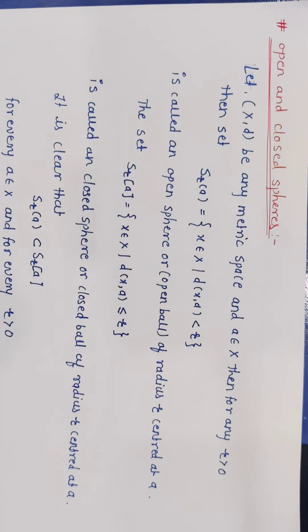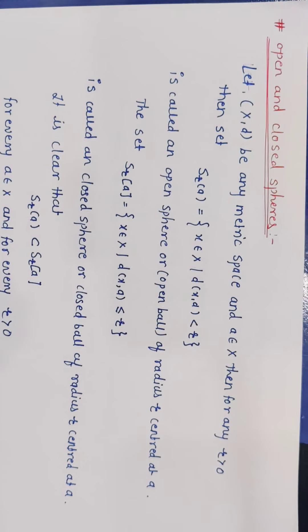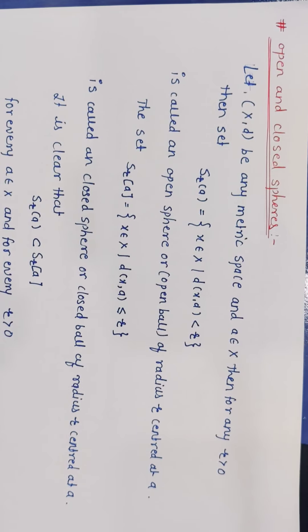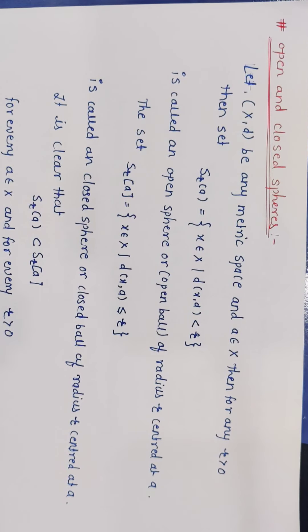Hello students. Last lecture mein humne kuch examples dekhe the based on a matrix space. Now hum uske aage continue karenge. Next definition: open and closed sphere. Let (X, d) be any metric space and a belongs to capital X. Then for any r greater than 0, the set S_r(a) = {x ∈ X : d(x, a) < r} is called the open sphere or open ball of radius r centered at a.